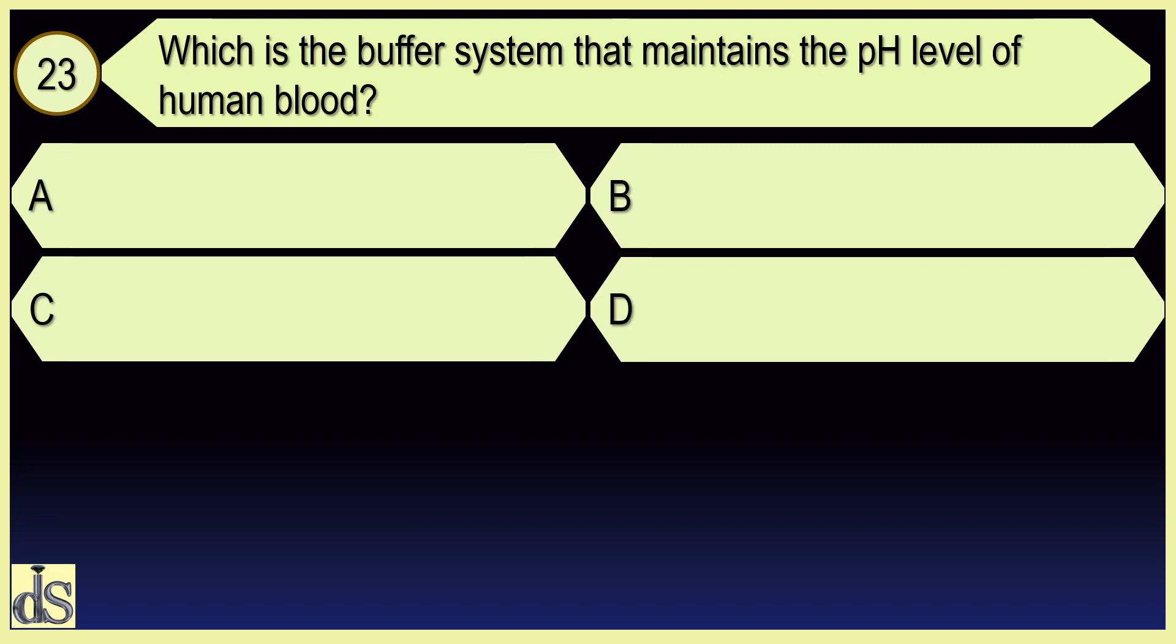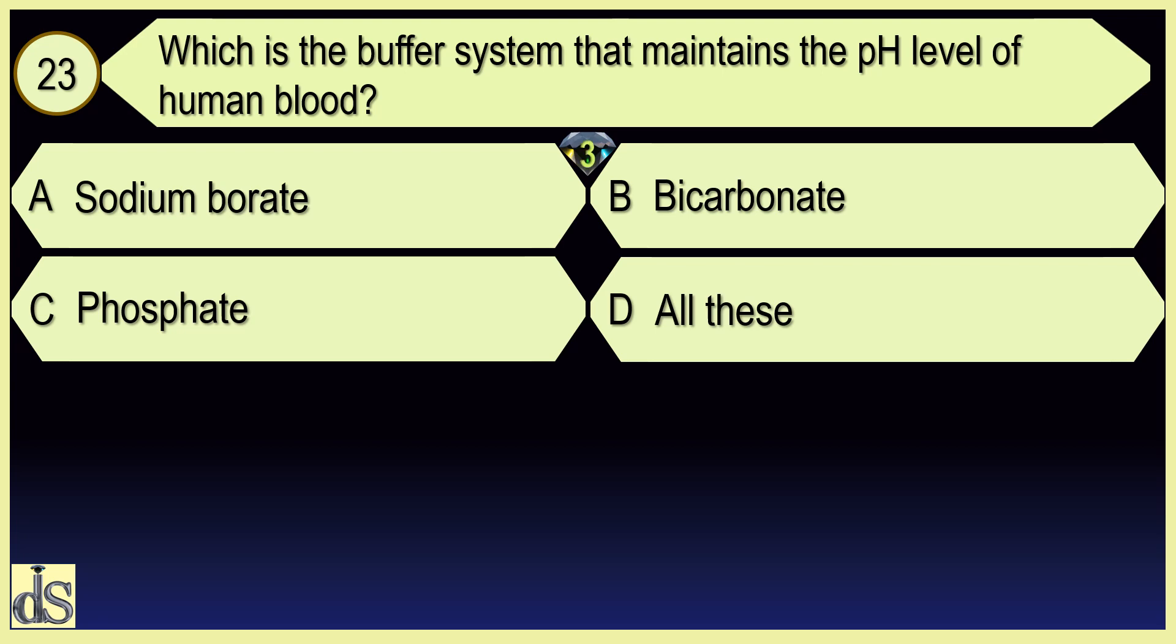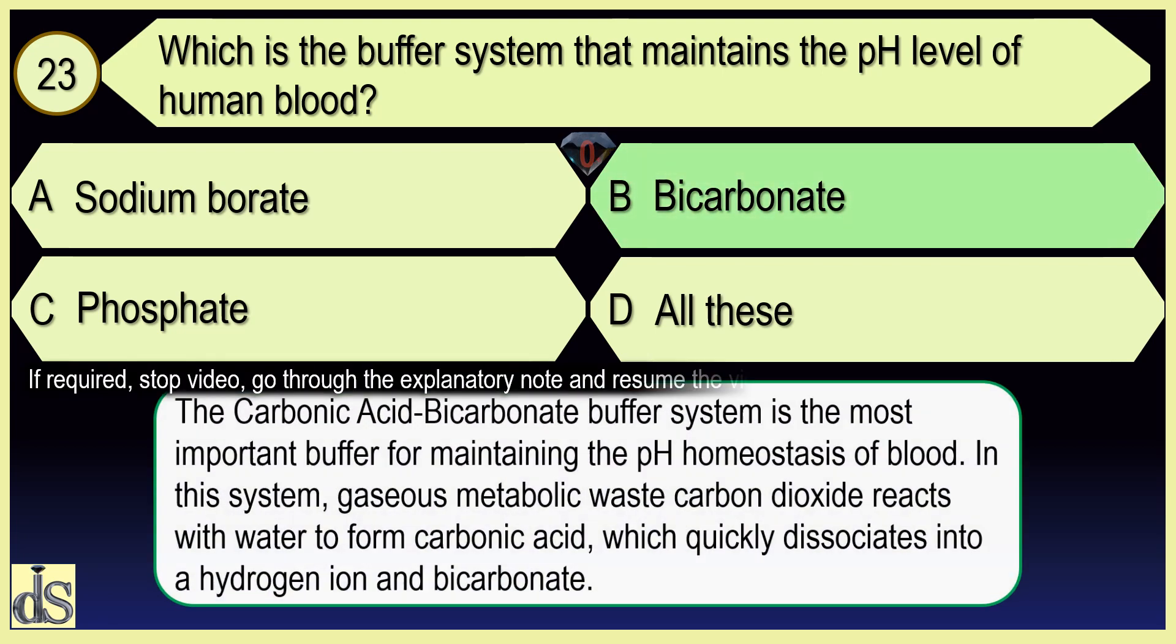Which is the buffer system that maintains the pH level of human blood? Bicarbonate.